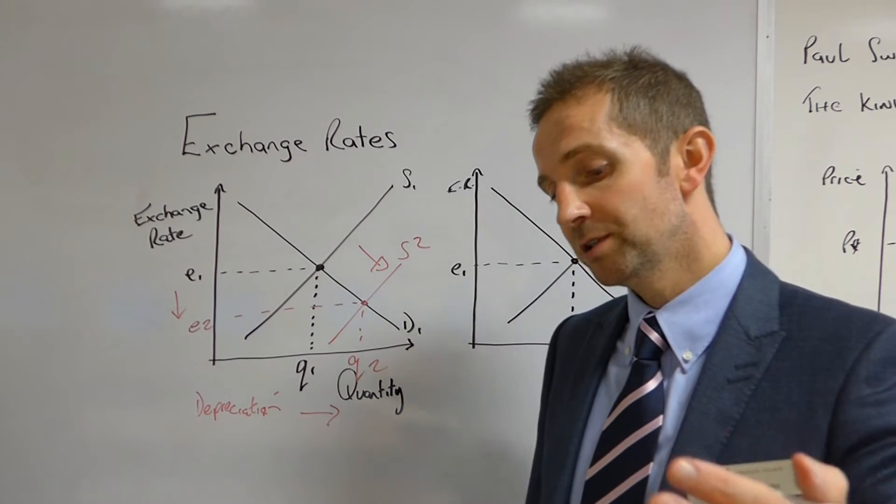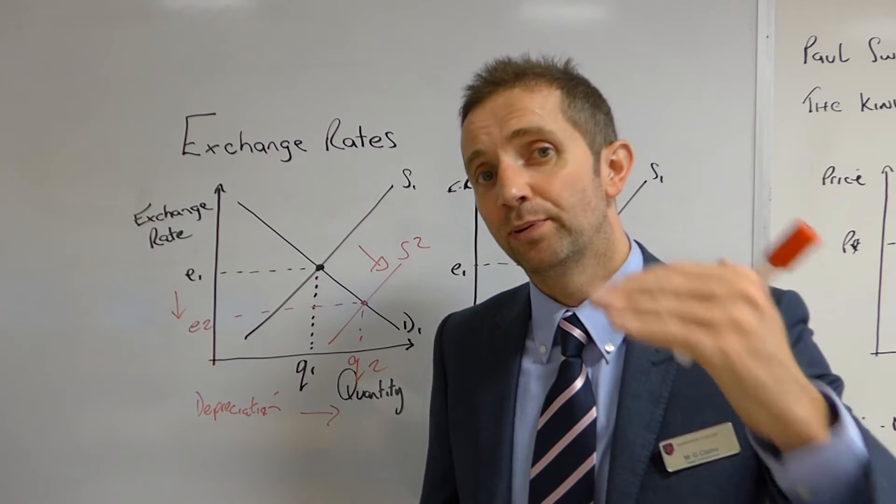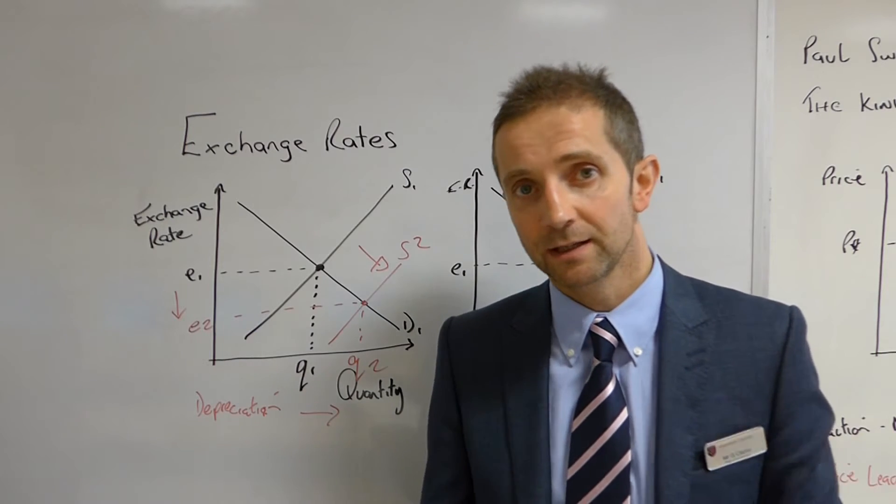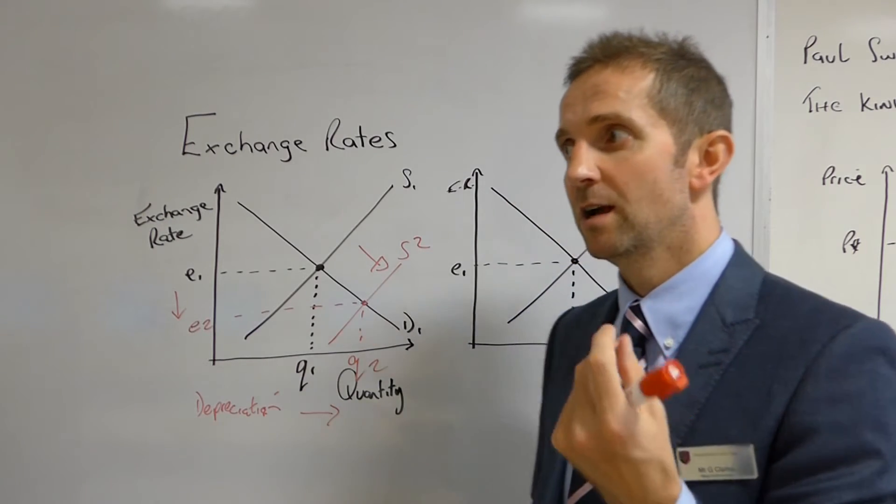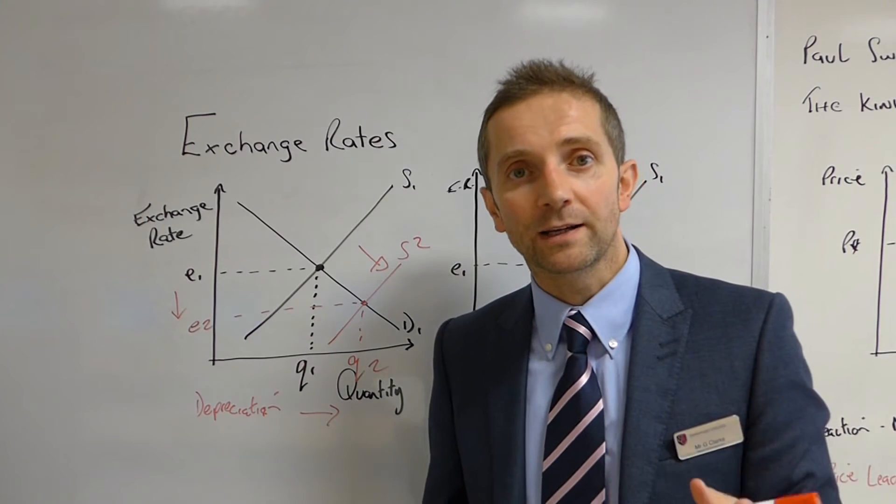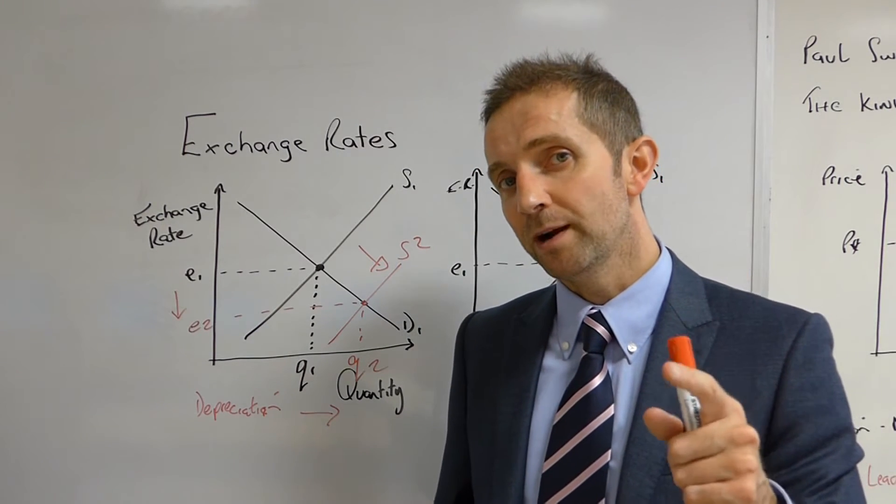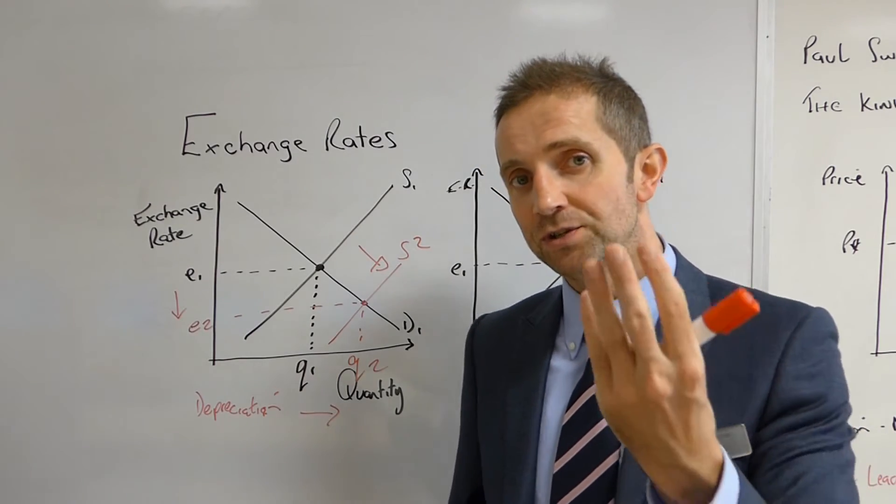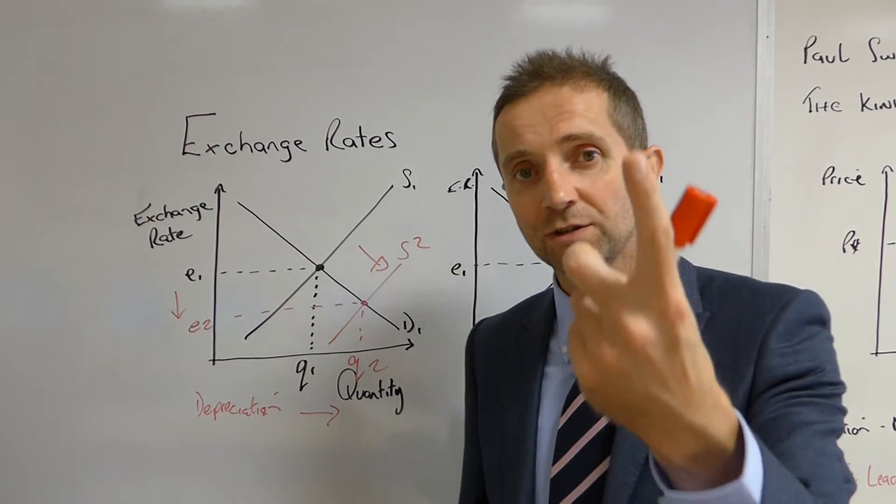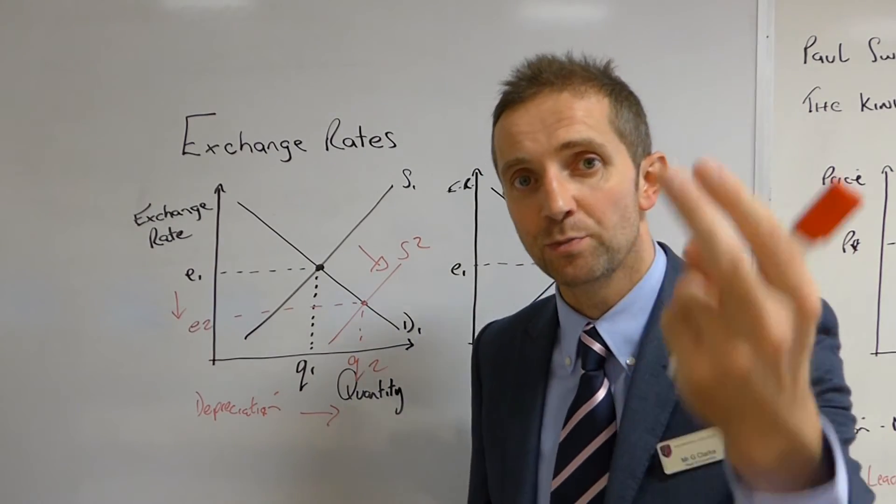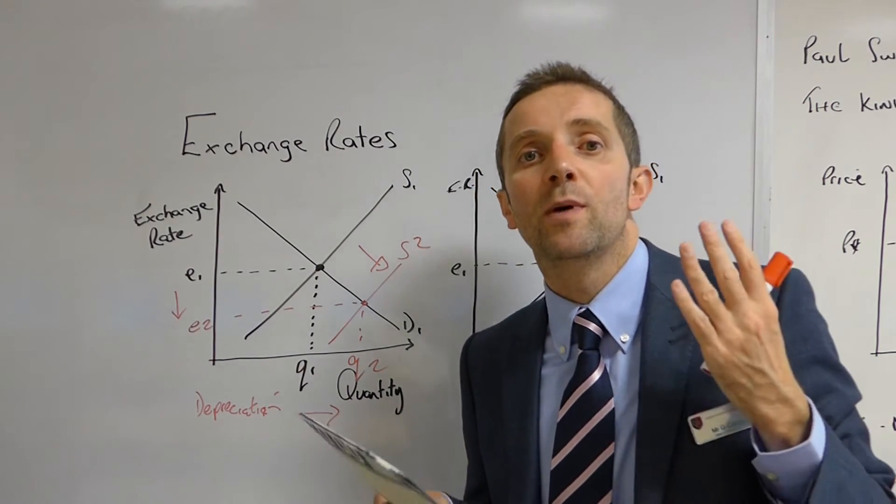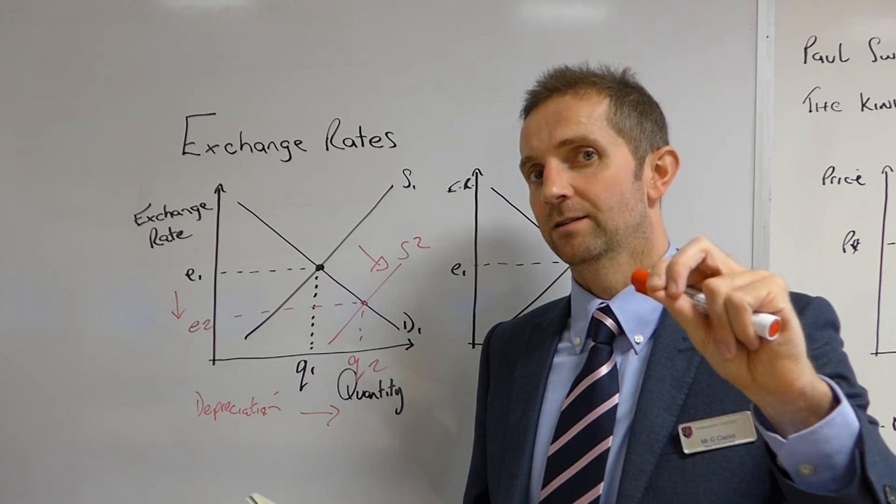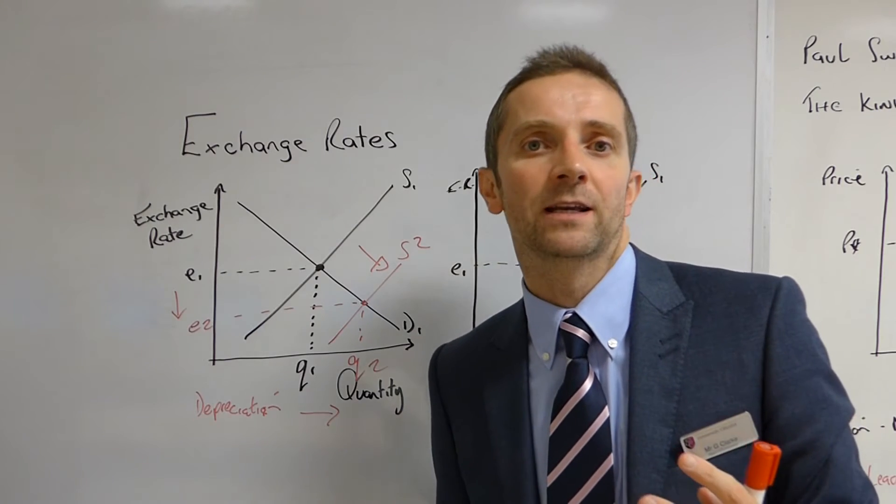Now Stiglitz goes on to point out that various programmes were then implemented for the likes of Portugal, Ireland, Italy, Greece and Spain in order to try and breathe some life back into these economies. So they were designed by the Troika, which is three institutions: the International Monetary Fund, the European Central Bank, and European Commission. They all came up with policies which were intended to somehow shock these countries back into life.